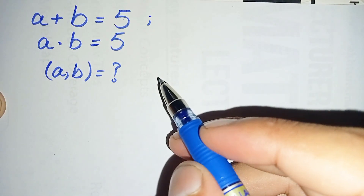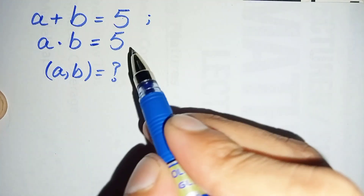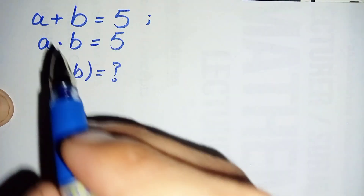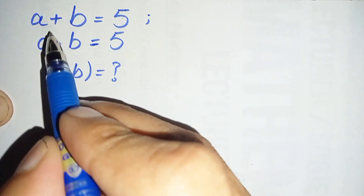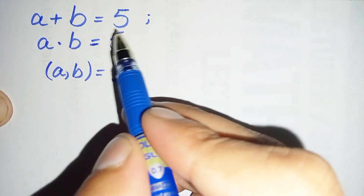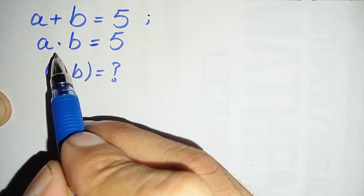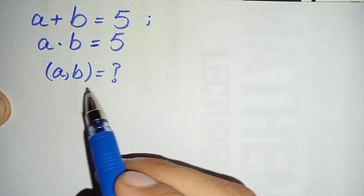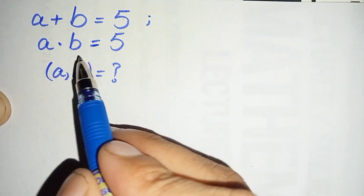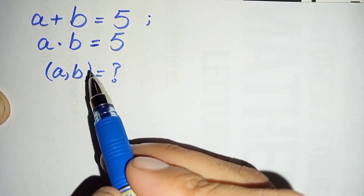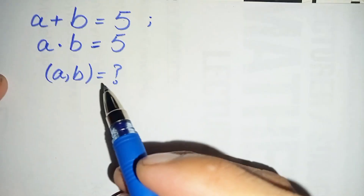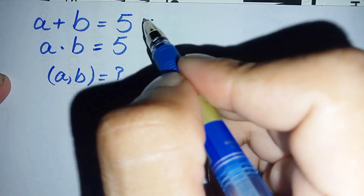Hi everyone, you are welcome. We will solve this algebra math problem where the sum of two variables a and b is 5, and the product of these two variables is also 5. We will try to find some possible solutions of this algebra math problem, so let's start our solution.